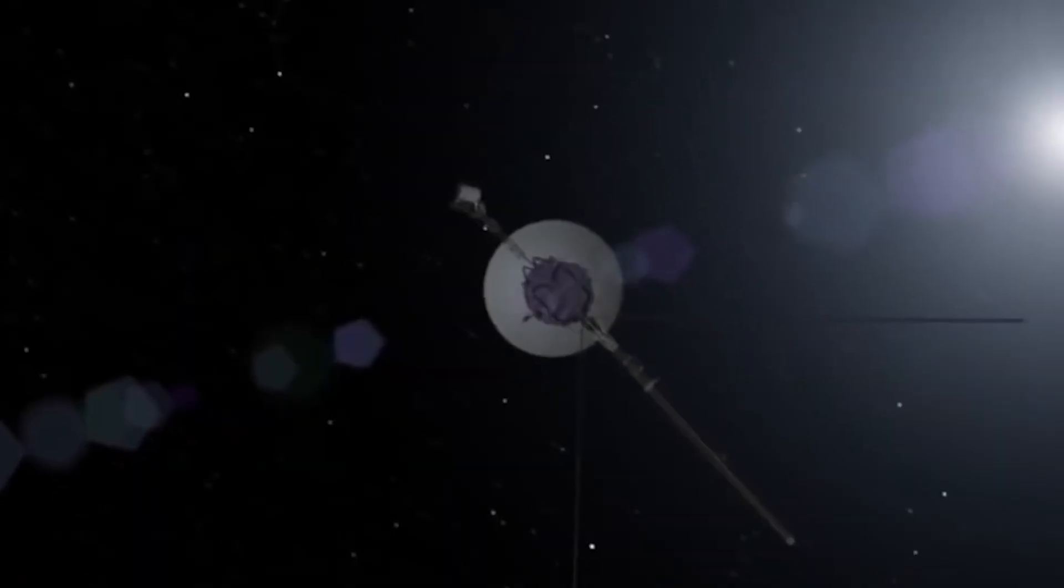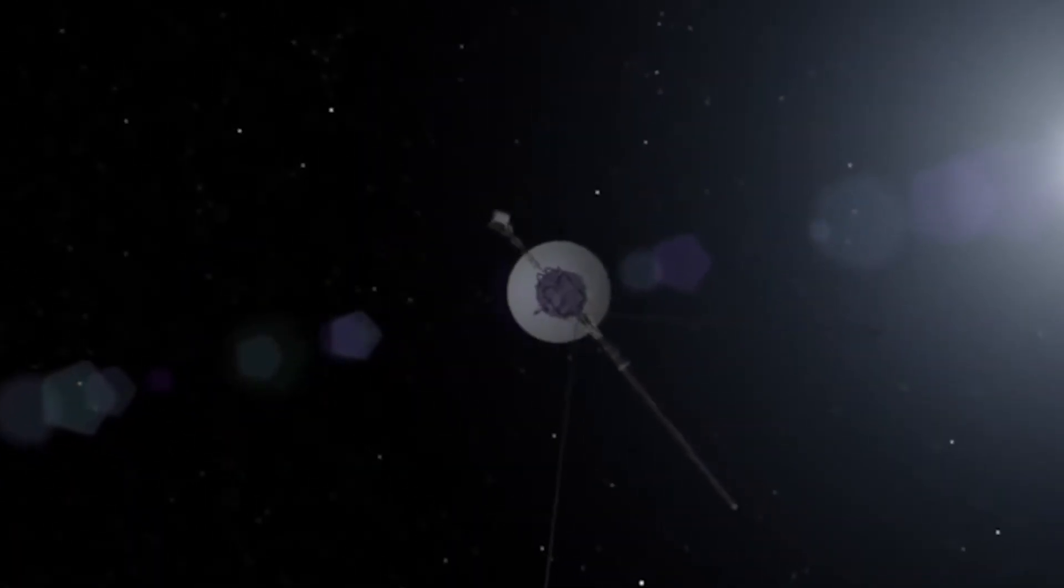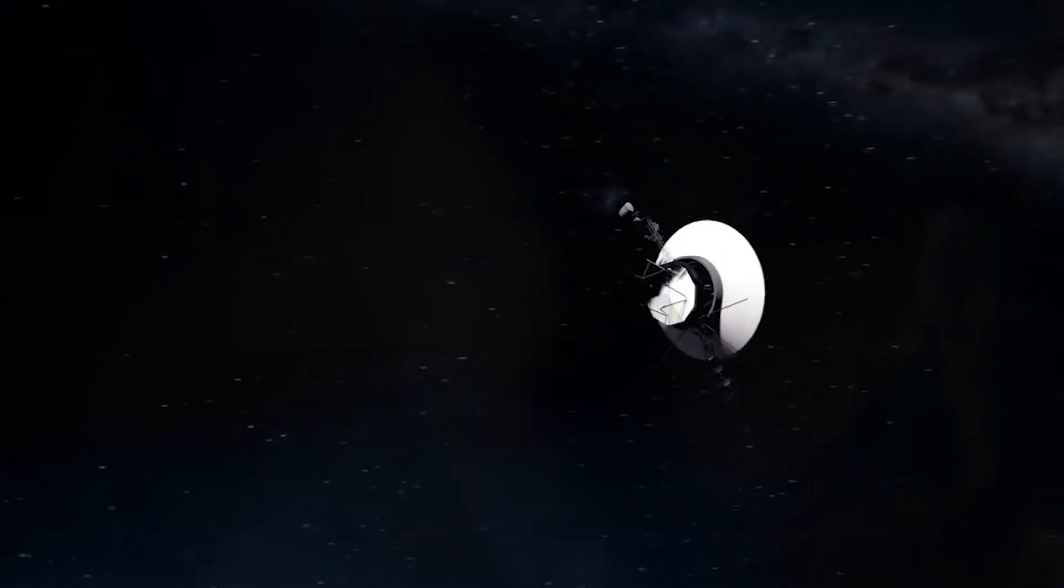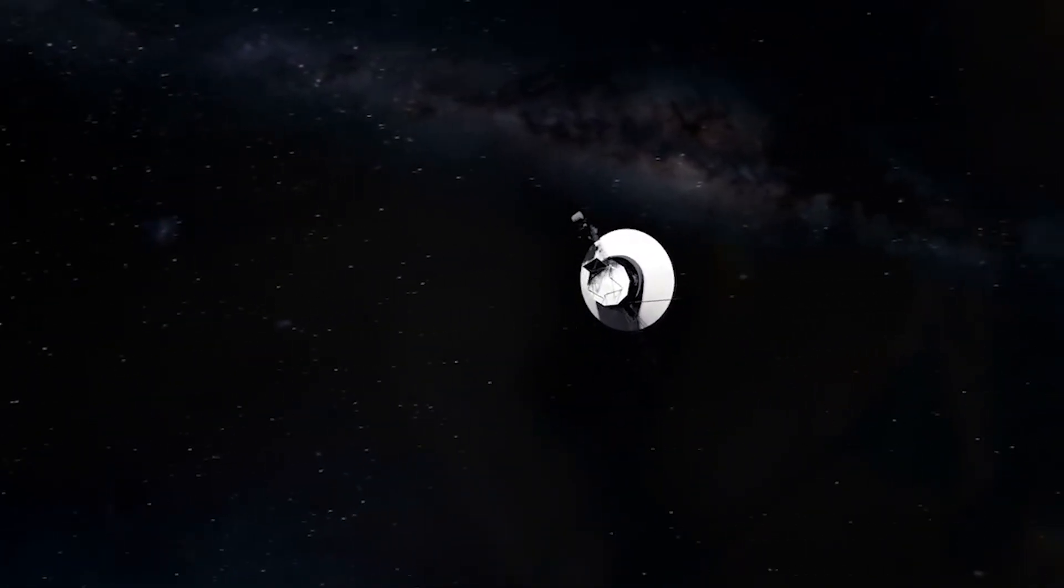For the first time, we don't need solar storms to measure space's structure. Voyager gives us a continuous readout of the density it's swimming through, right now, in real time.